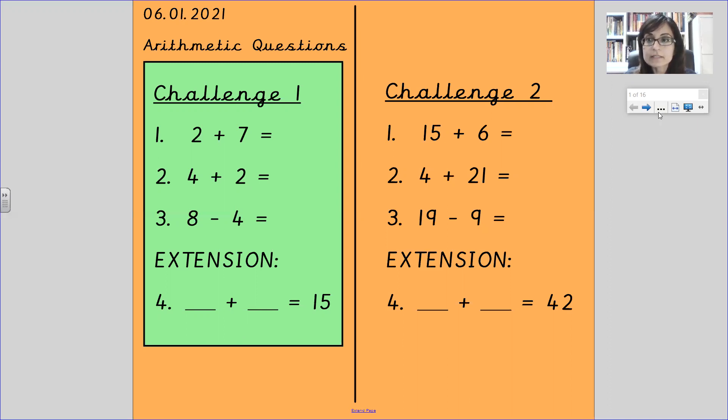Right let's get started. We need a pen. So 2 plus 7 is 9. We know this because we can put the larger number in our heads and count on 2: 7, 8, 9. Same with number 2, 4 plus 2. Larger number in your head, 4 and count 2: 4, 5, 6.